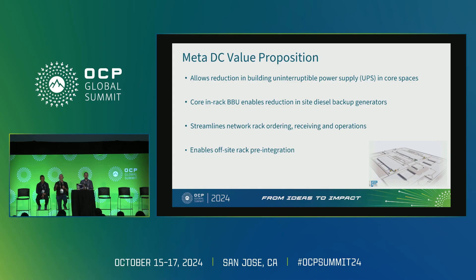It's got in-rack backup. Now we can start to homogenize the power within our data center. We can start to scale down our building-scale UPS, which also allows you to start to reduce your building footprint — very good for design, engineering, and construction. So a lot of synergies there. Another great synergy: once it's a compute rack, for the last 10 years we've got an ordering process, a delivery process, an installation process, and off-site integration of compute racks. Instead of maintaining two processes for network racks and compute racks, we can have a unified process across the fleet — which is a great advantage.